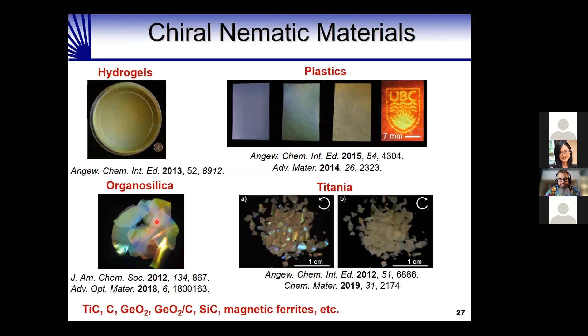Over the last five to ten years we've developed a whole family of materials using this concept. We can use templating with cellulose nanocrystals to make plastics whose color varies with different pitches of the chiral nematic structure, and we can pattern them. We can make hydrogels that change color when they swell because that changes the helical pitch. We can make organosilicas, titanium dioxide, and other solid-state materials that are iridescent when viewed through a left-handed circularly polarized filter. We've extended this to titanium carbide, carbon, germania, magnetic ferrites, and other metallic and semiconducting materials.